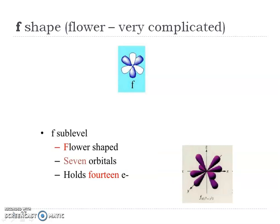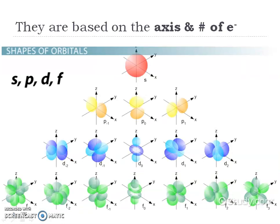This gets complicated for D and F because now we're going crazy with the axes — it's no longer just X, Y, and Z. Now we have sub-X and sub-Z axes. The shapes are based on those axes and the number of electrons: the S holds two, the P holds six total, the D holds a maximum of ten electrons, and the F holds a maximum of 14 electrons.